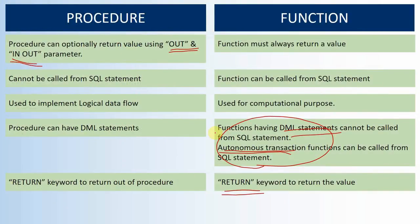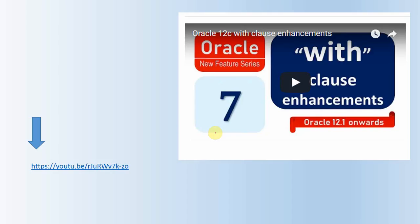There is one more enhancement specific to procedures and functions. Up until version 11, you could only create procedures and functions in PL/SQL, then invoke functions from SQL and procedures from PL/SQL. But from Oracle 12.1, there is an enhancement to the WITH clause where you can write functions and procedures directly in the WITH clause and execute them as part of a SELECT statement. In this case, the function and procedure never get created inside the database — they are just part of the WITH clause statement.